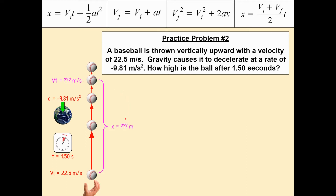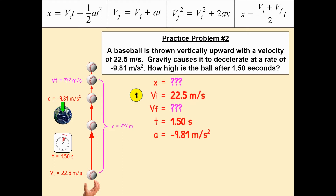Let's do the first real part of solving a kinematic equation: list out our variables. We don't know displacement — that's what they're asking for. We do know initial velocity: 22.5 meters per second. We don't know final velocity. We know time is 1.5 seconds, and we know acceleration due to gravity is negative 9.81 meters per second squared.